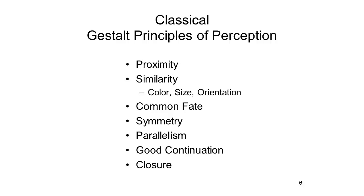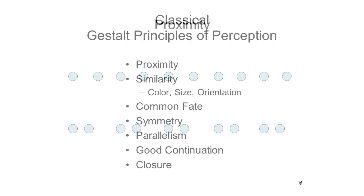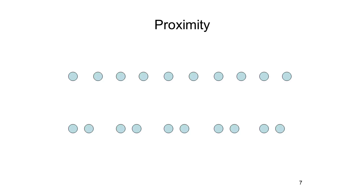These phenomena are summarized in the classic Gestalt principles of perception articulated by Wertheimer, Köhler, Koffka, and other Gestalt psychologists in the 1920s and 1930s. According to the principle of proximity, we group objects together that are near each other. In the first row of a figure, we see 10 dots; but in the second row, we see five pairs of dots instead of 10 individual dots — yes, there are 10 dots there, but that's not what we see. We see five pairs.